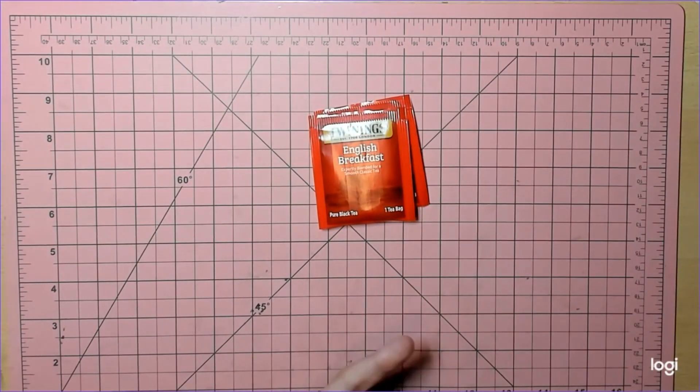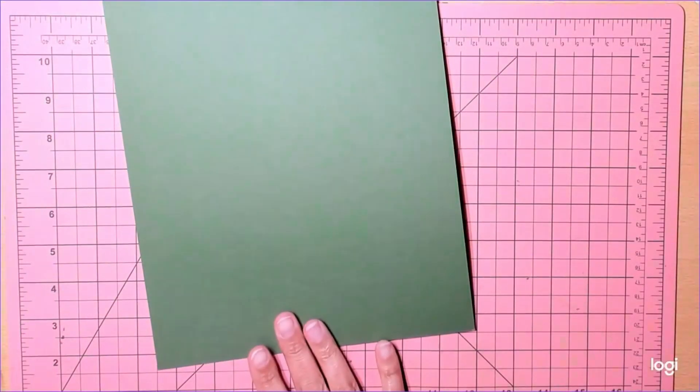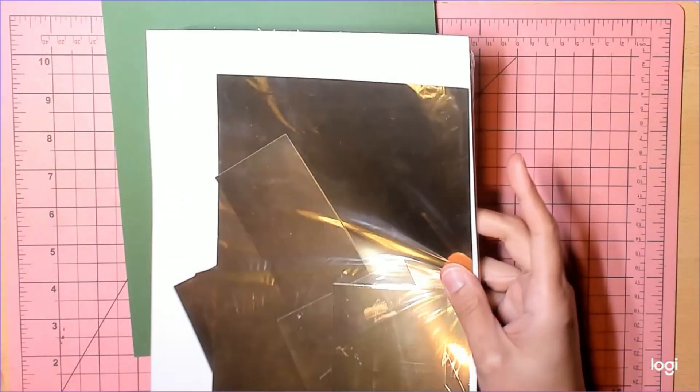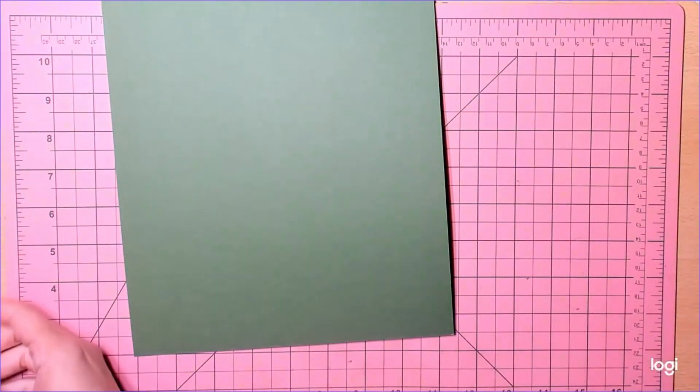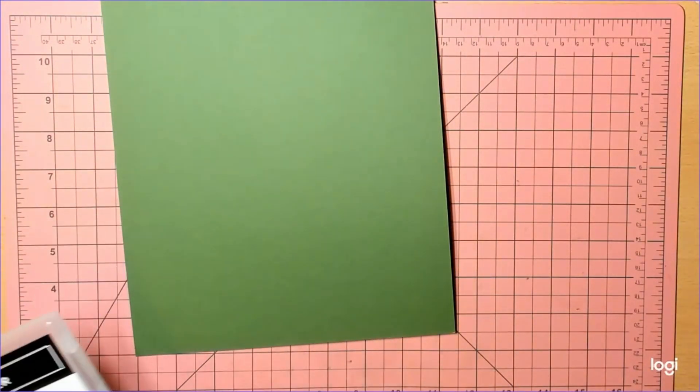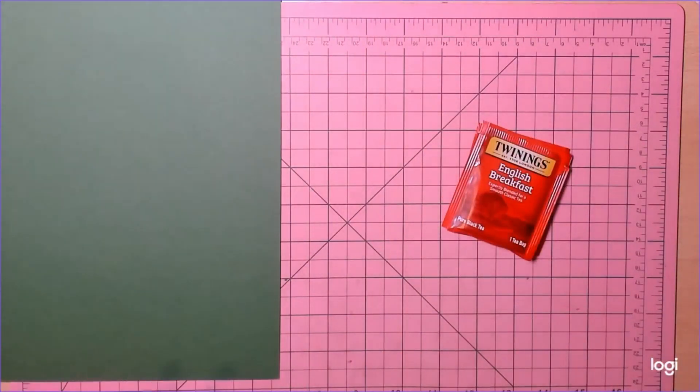How fun would that be? I just don't have any right now, so I have English breakfast, but definitely get the Irish breakfast tea. That would be really fun. I'm using Garden Green from Stampin' Up, some gold from Michaels, this is the old Stampin' Up Lucky Clover, you can't get it anymore.